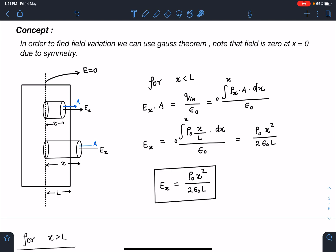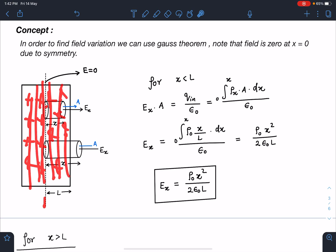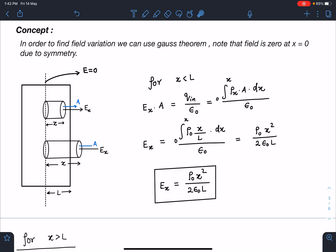The concept of this problem: In order to find field variation we can use Gauss's theorem. Note that field is zero at x = 0 due to symmetry. We can observe that since the entire slab is positively charged with |x|, for negative and positive x everywhere this charge is positive. This slab can be assumed as if many thin sheets are placed next to each other, and field due to thin sheets is constant and perpendicular to the plane.